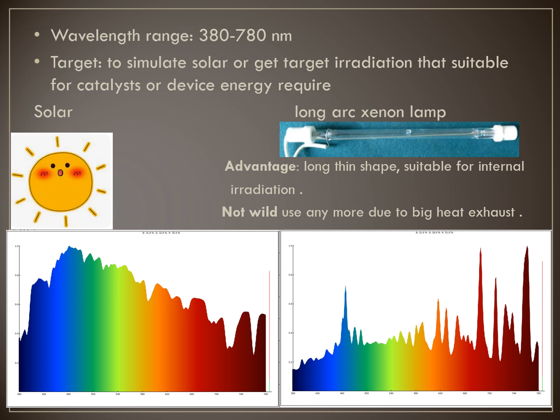The wavelength range is 380 to 780 nanometers. They need to use an optical resource that can simulate the solar irradiation that is suitable for the catalyst or device.